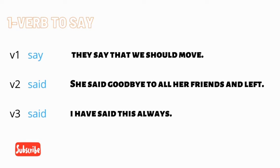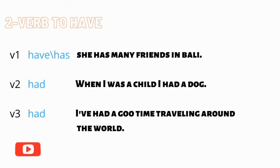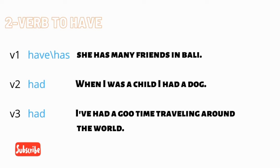Verb number two is 'to have.' The base form is 'have' or 'has,' the past form is 'had,' and the past participle is also 'had.' Examples: 'She has many friends in Bali.' Past form — 'When I was a child, I had a dog.' Past participle — 'I've had a good time traveling around the world.'